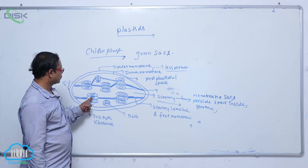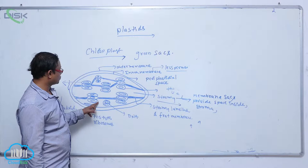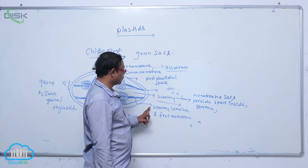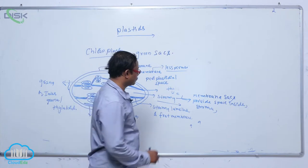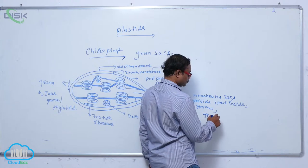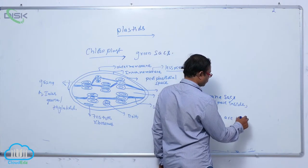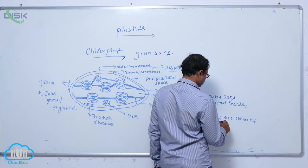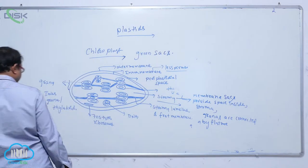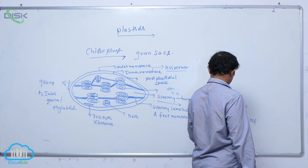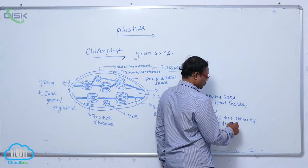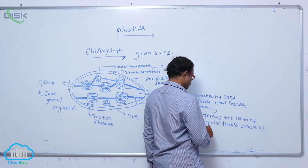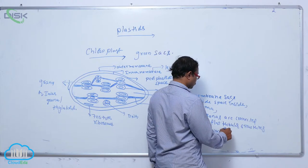Granas are connected by the flat tubular structures from one side to that another side. They are known as that stroma lamella or fret membrane. Granas are connected by flat tubular structures, so these flat tubular structures are known as that stroma lamella or fret membrane.